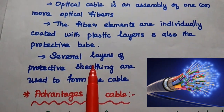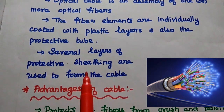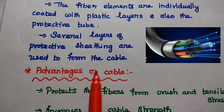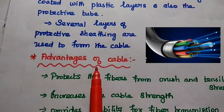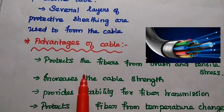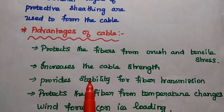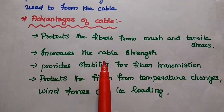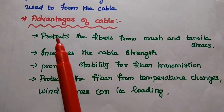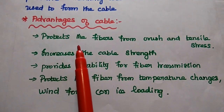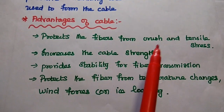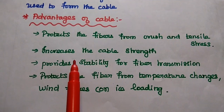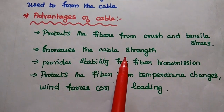Here several layers of protection are used to form the cable. Fiber cable is an important structure used in optical communication systems. There are several advantages of using this optical cable. This cable is mainly used to protect the fibers from crush and tensile stress. It is mainly used to increase the cable strength.